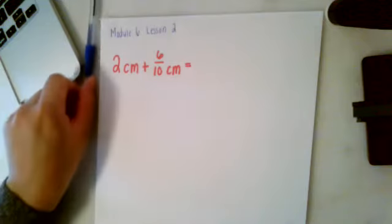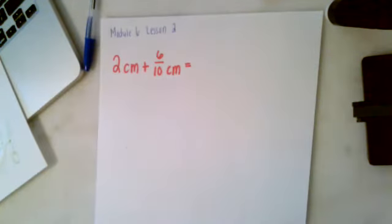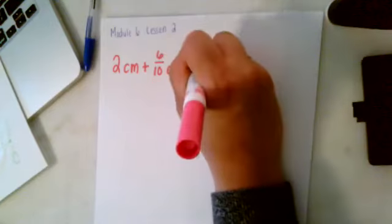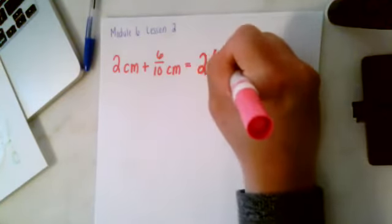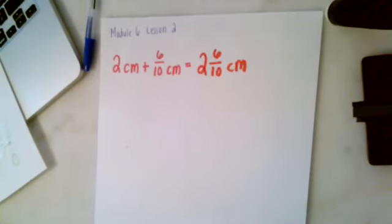So let's say I have 2 centimeters and I want to add it to 6 tenths. I know that I can only add a fraction with a fraction and a whole number with a whole number. So all this becomes is a mixed number and it becomes 2 centimeters and 6 tenths. I can't combine or change any of the terms.